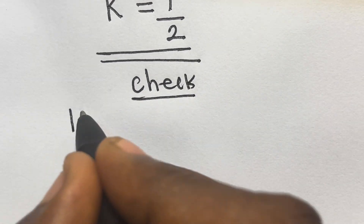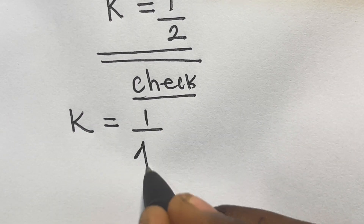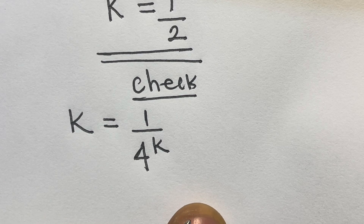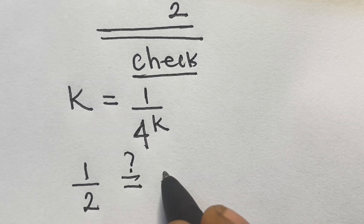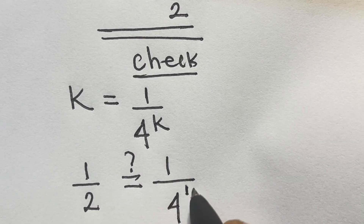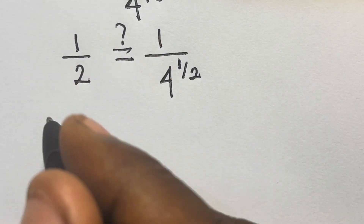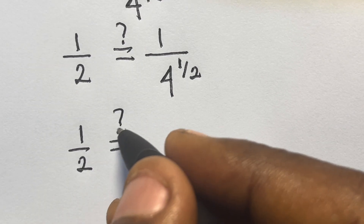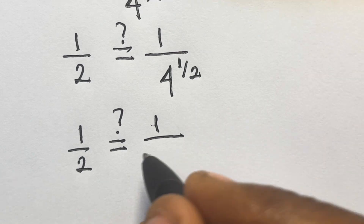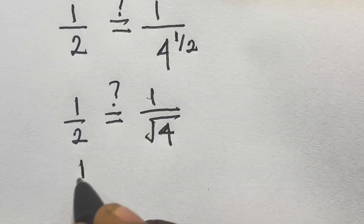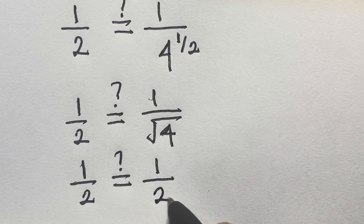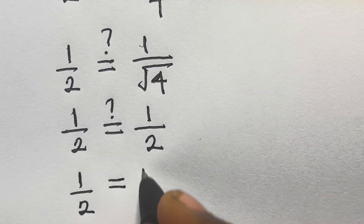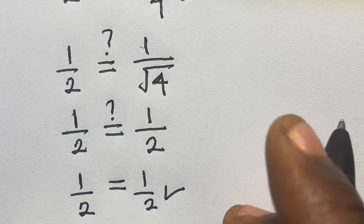Let's check. To verify, we substitute k equals 1/2 into k equals 1 divided by 4 raised to the power k. We have 1/2 equals 1 divided by 4 raised to the power 1/2, which gives 1/2 equals 1 divided by 2. That confirms k equals 1/2 is valid.